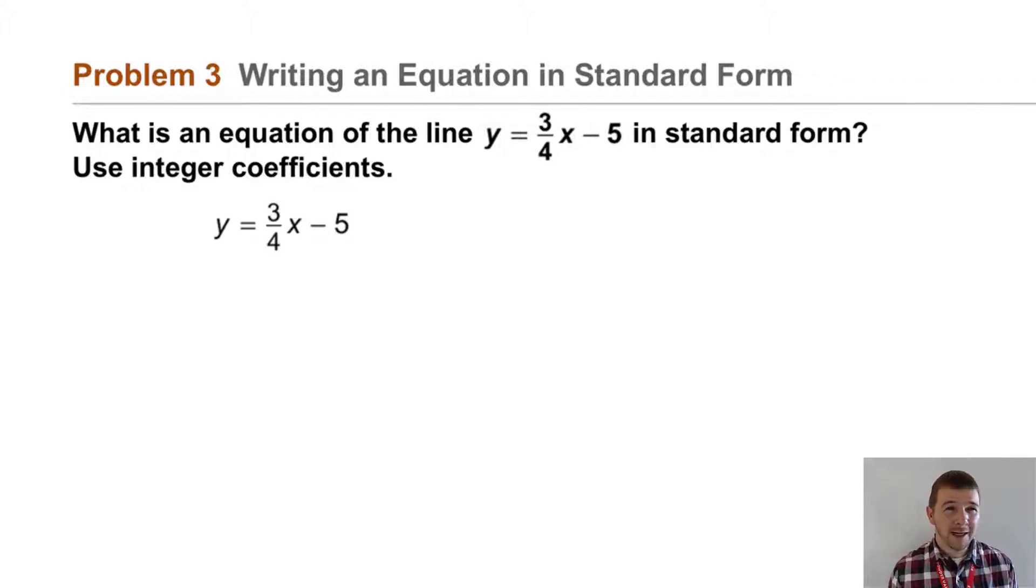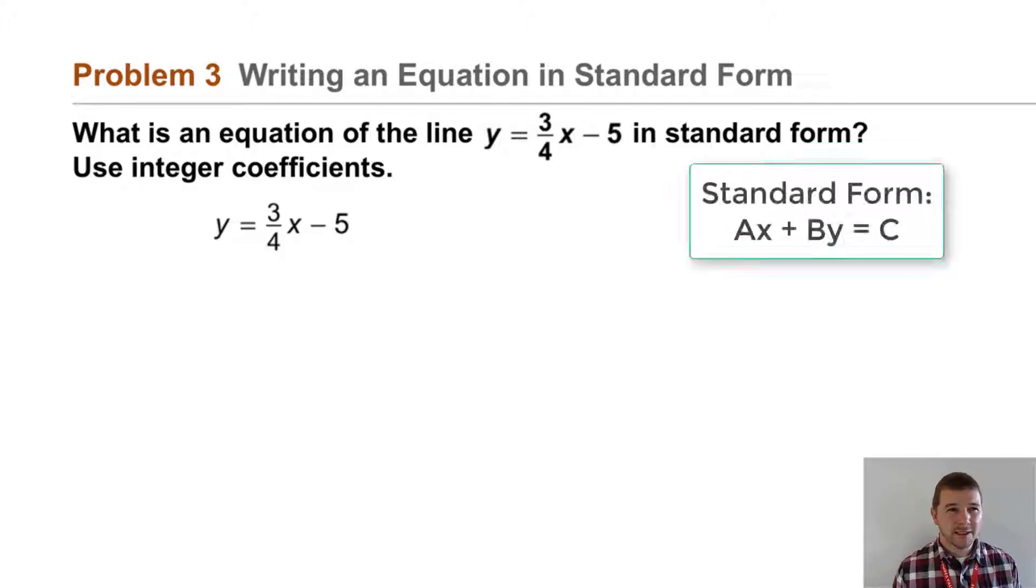Well, first we start by rewriting the equation, which was given to us in slope-intercept form. Now we need to rewrite it so that it takes on standard form, which remember is ax plus by equals c. So we'll subtract 3 fourths x from each side. That gets our x and y terms on the left. So negative 3 fourths x plus y equals negative 5.